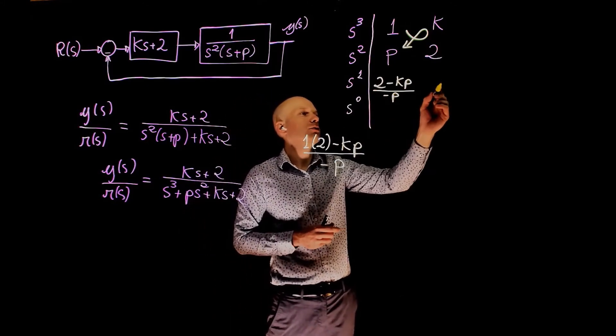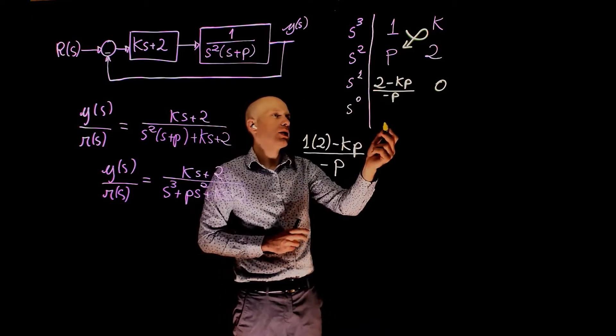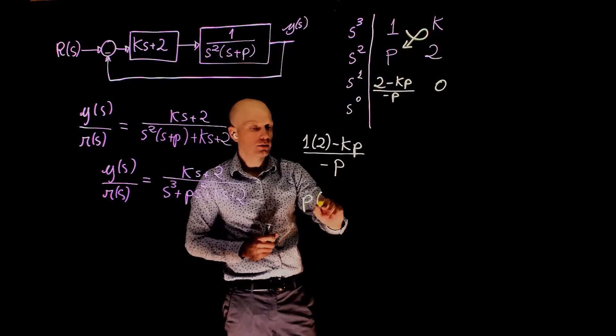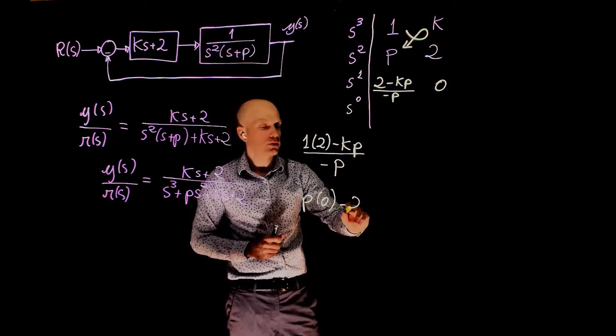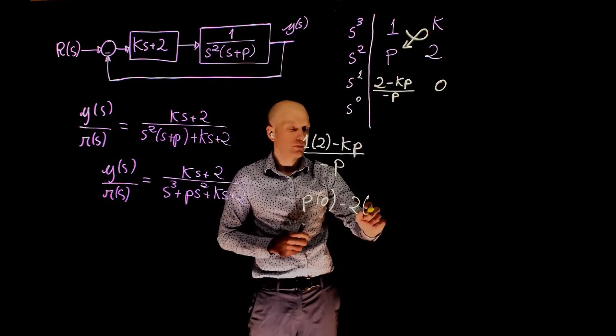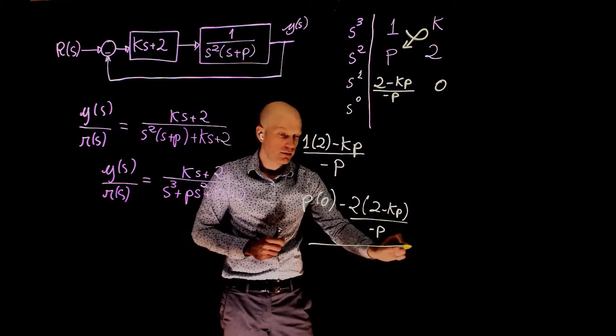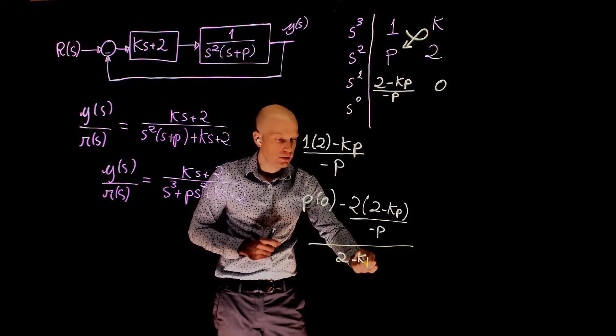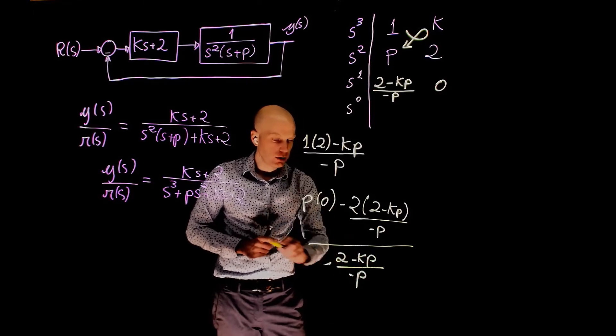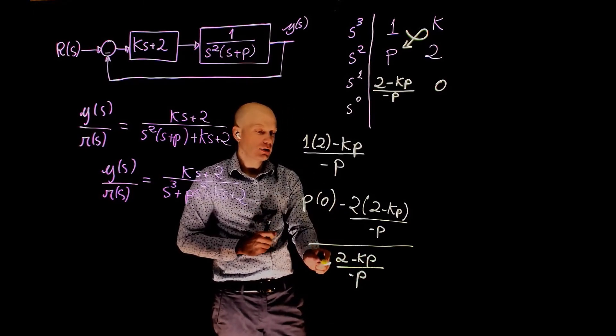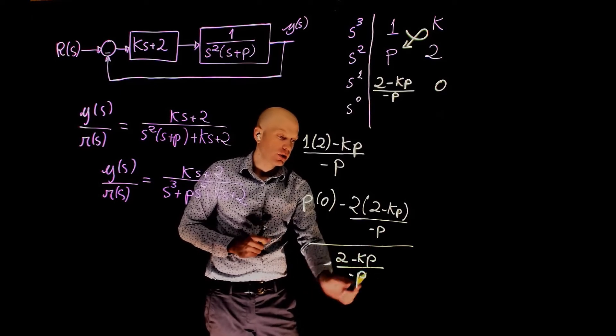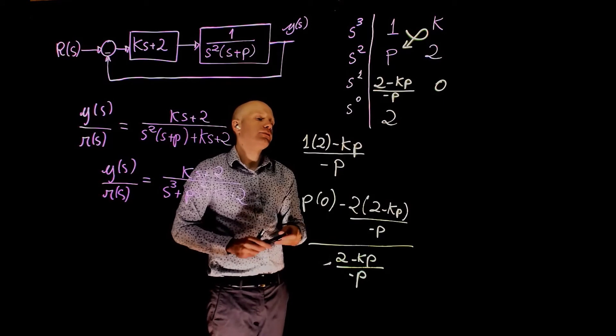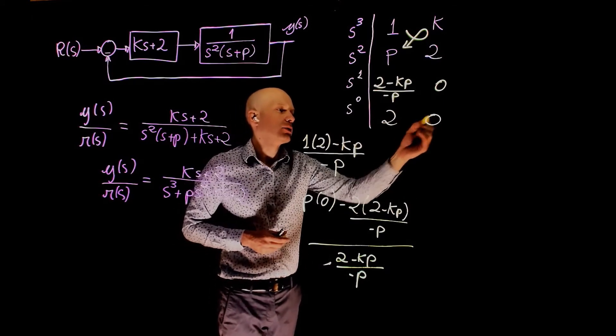This element is 0, which means that this element needs to be 2, right? p times 0 minus 2 times this entire element, all divided by the same element, 2 minus k times p over negative p with a negative sign. So this negative sign cancels this negative sign. This part of the expression is the same. We are left with 2, which is the number we had there. So this is 2. And of course the last element here is 0.